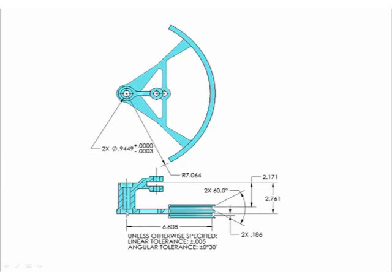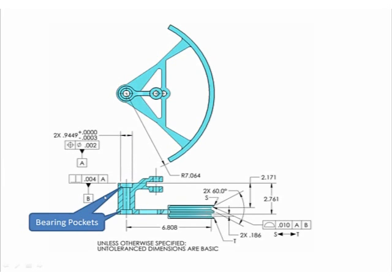Also, the bearing pockets were machined in one setup, and then they would refixture the part to machine the radius in another setup. So oftentimes the center of the radius was not right at the center of the bearing pocket. The solution is to identify these bearing pockets as your primary datum feature.